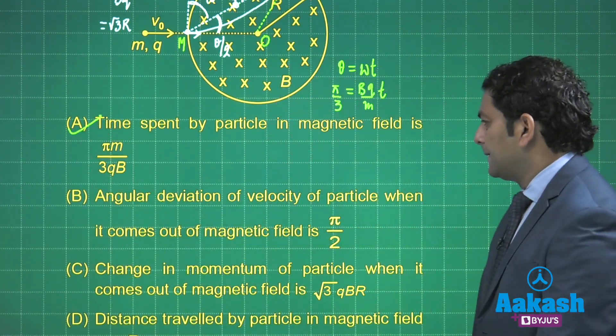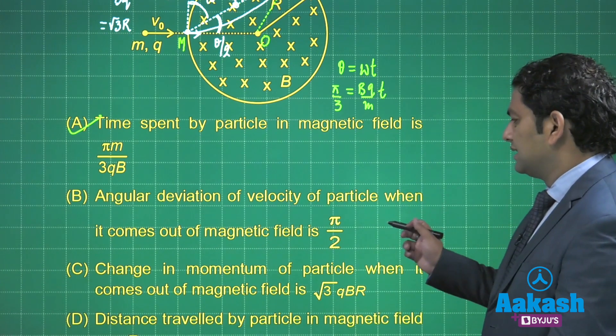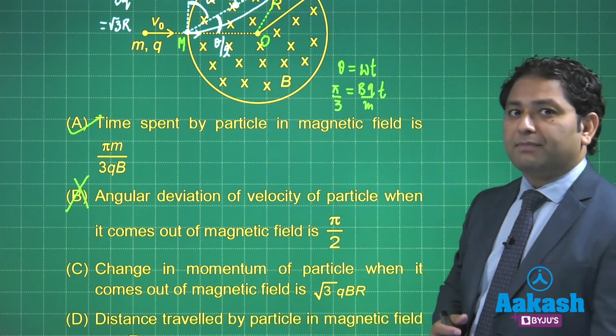Option number B: Angular deviation of velocity is π by 2. No, that is false. Because we have calculated it is π by 3.